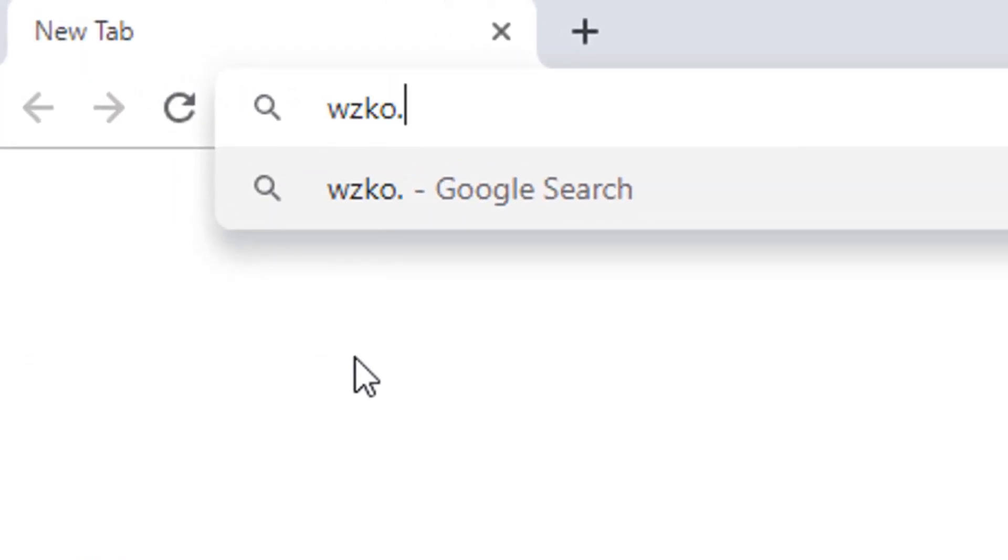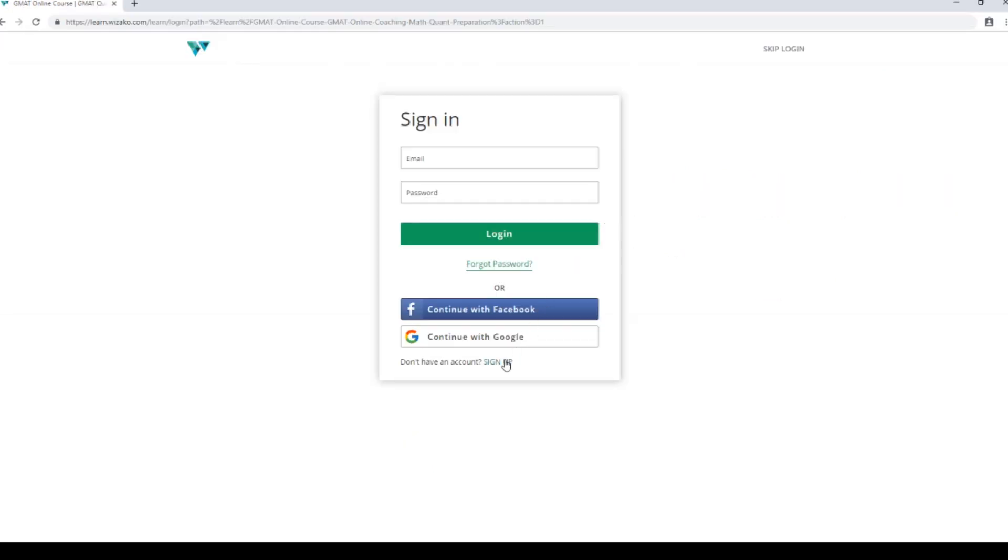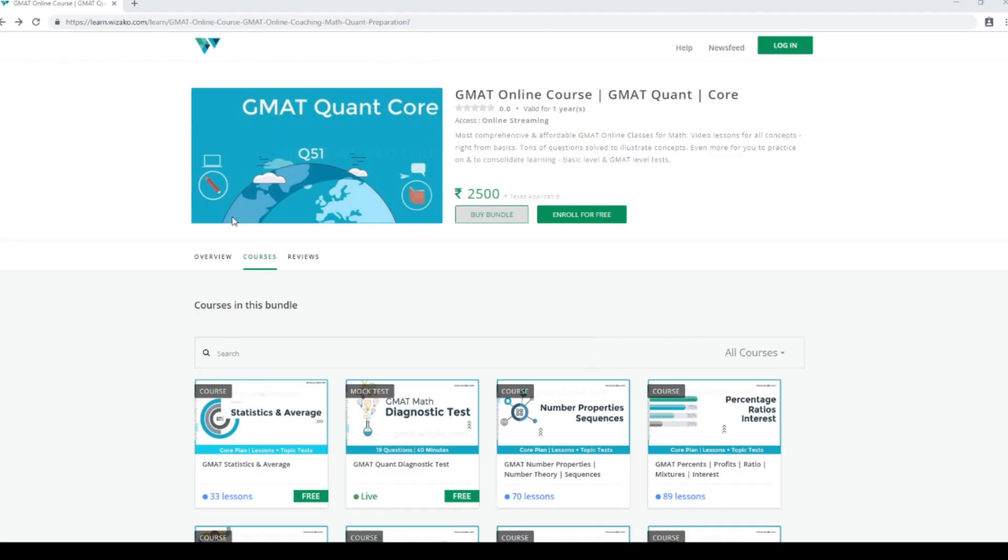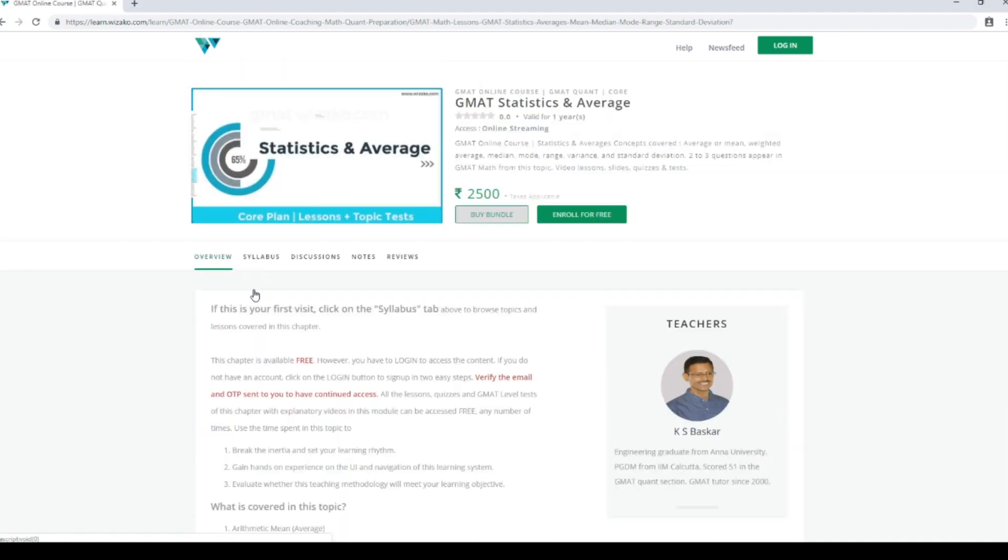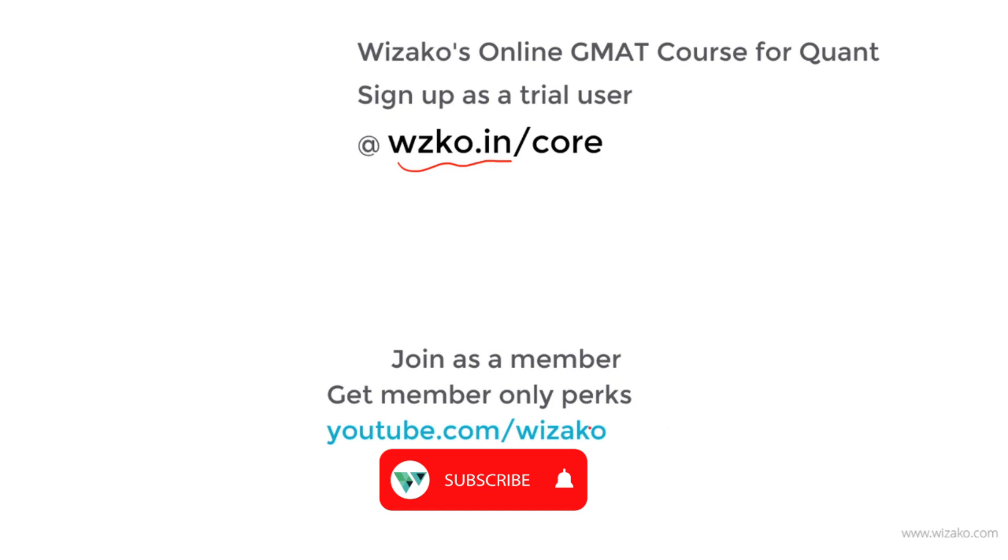Before you leave, two things. Sign up as a trial user at wzko.in slash core. One of the most comprehensive online GMAT courses. Get started with a free topic statistics and averages. Build momentum to your GMAT preparation. Subsequently pay up and unlock the remaining topics. Lastly, subscribe to the channel youtube.com slash wizaco and spread the word among your friends who are preparing for GMAT. You may also choose to join this channel as a member for a small monthly fee and enjoy member only perks that come with it and will help you boost your GMAT preparation.